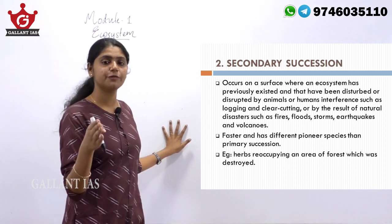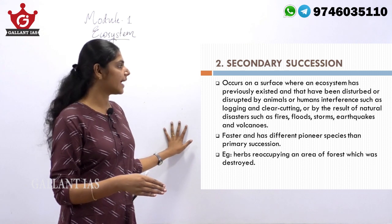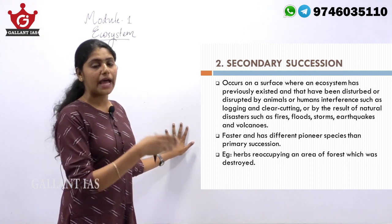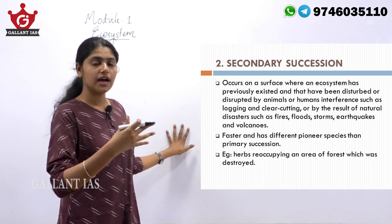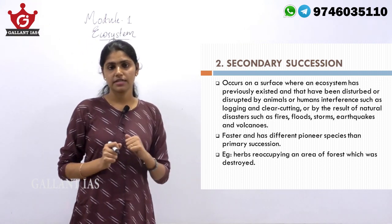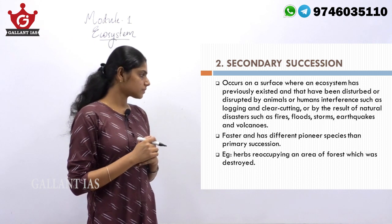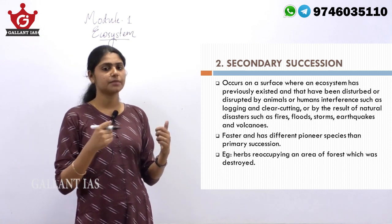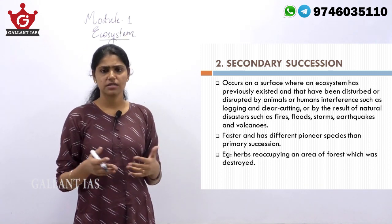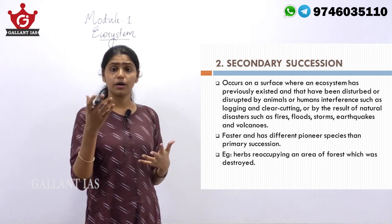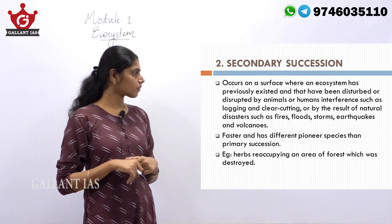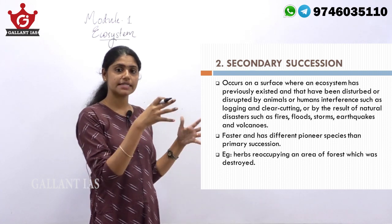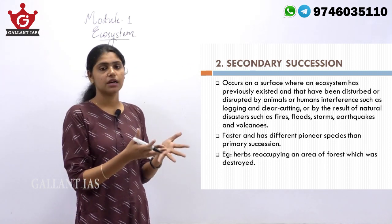Secondary succession occurs on a surface where an ecosystem previously existed but has been disturbed or destroyed by some natural or man-made causes. For example, take the case of a forest ecosystem that was destroyed by natural forces like floods, earthquakes, droughts, or forest fires.